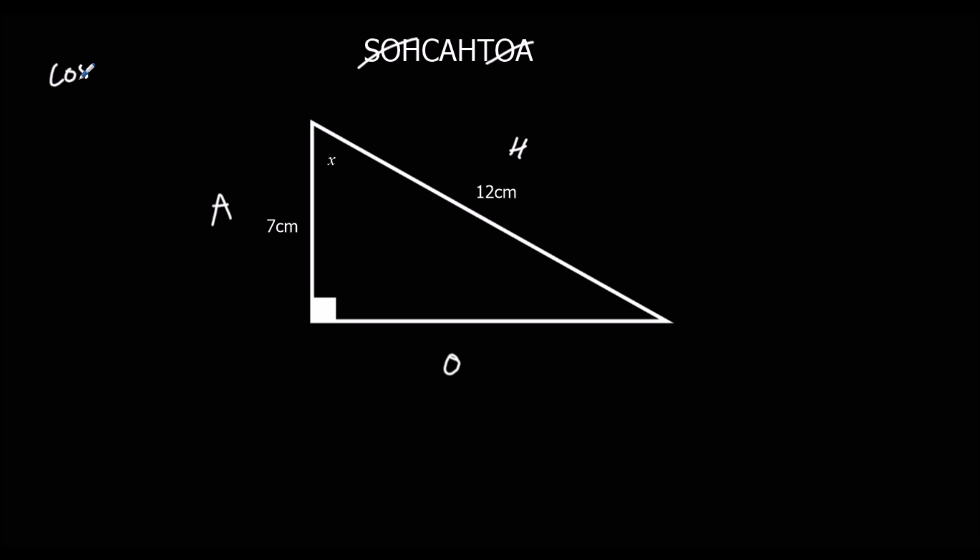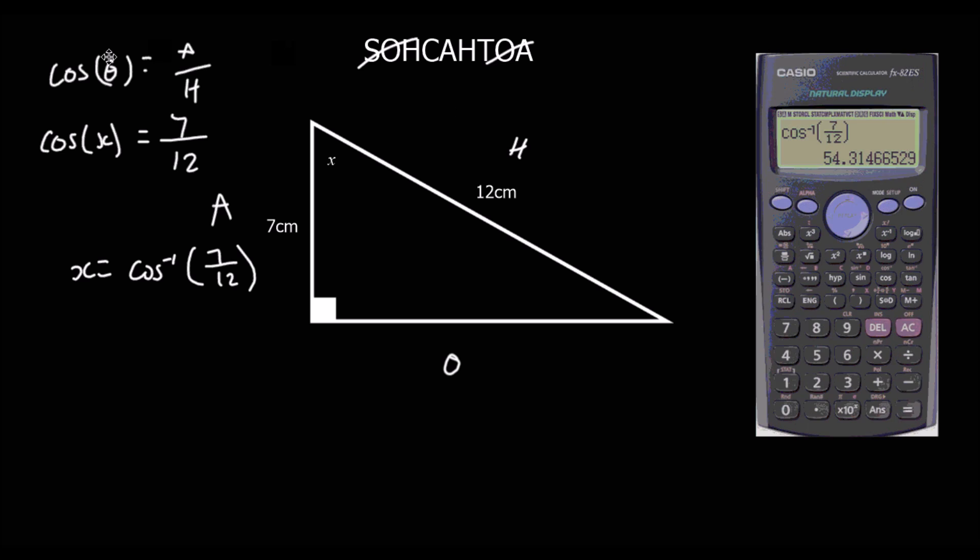So, cos of the angle is adjacent over hypotenuse. In this example, we've got cos x is 7 over 12. To get cos away from x, we shift cos. So, shift cos, 7 over 12. And we type that in the calculator.